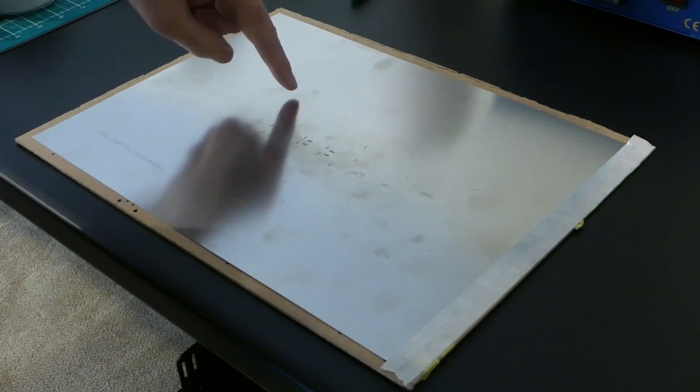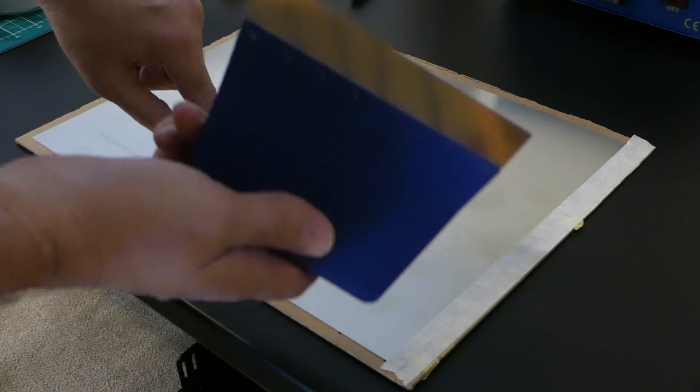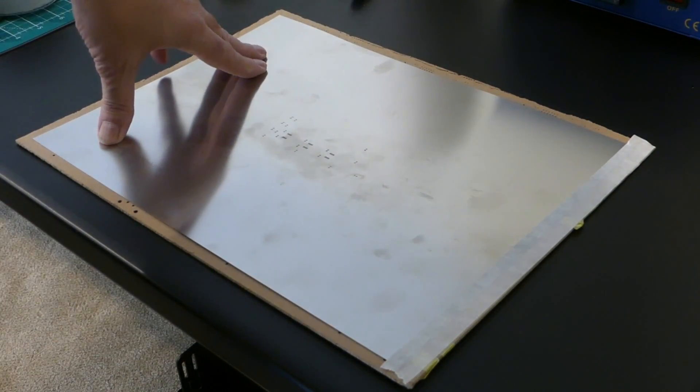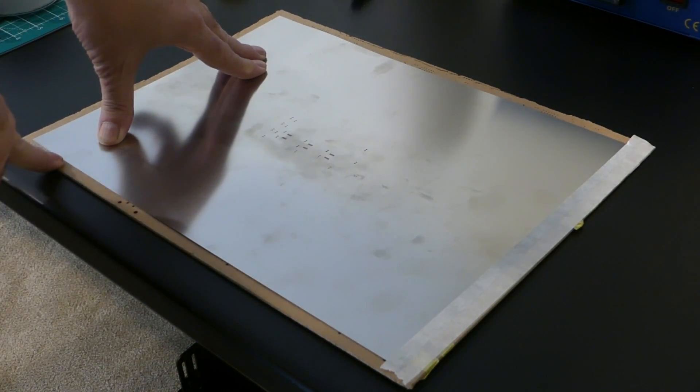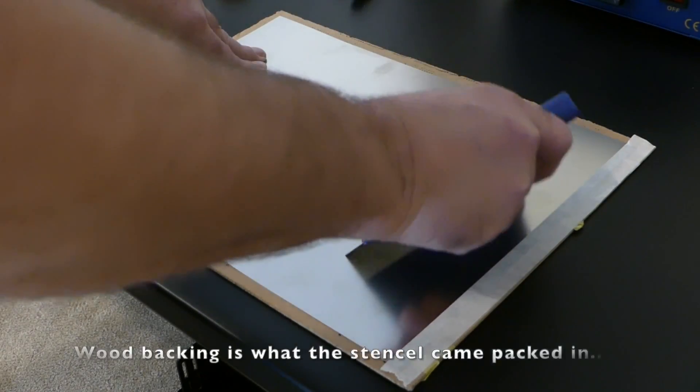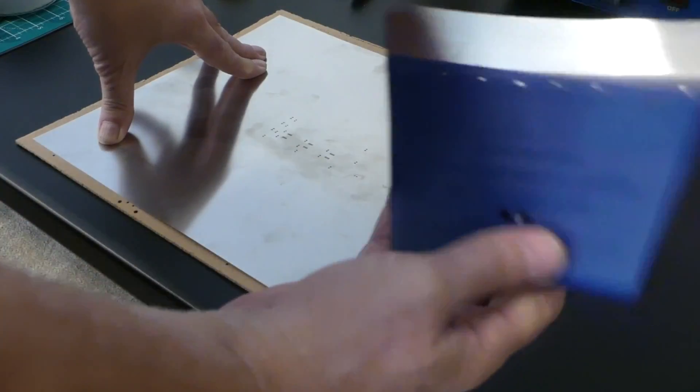Then I'll put the solder paste, a big blob line of it here, and then I'll use the solder paste squeegee, hold the stencil down to the wood backing so it doesn't slide, and slide the paste across. And that'll apply the paste.